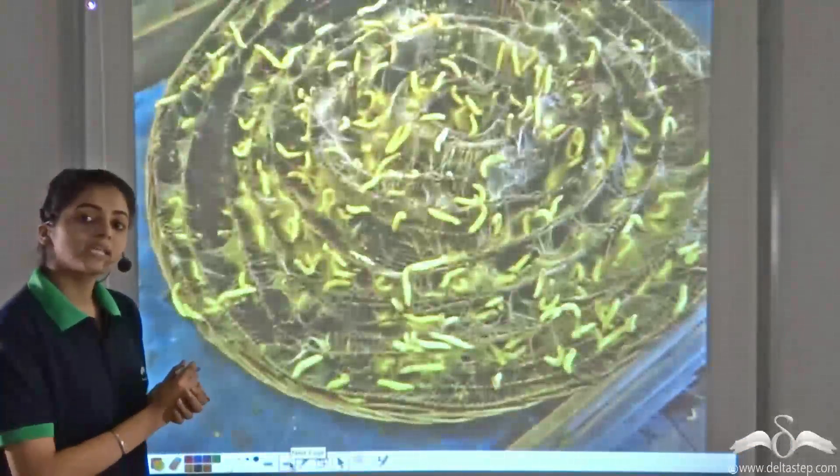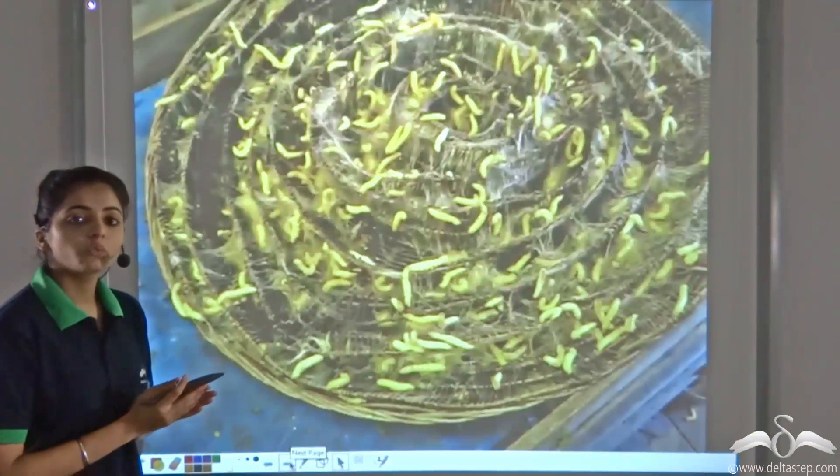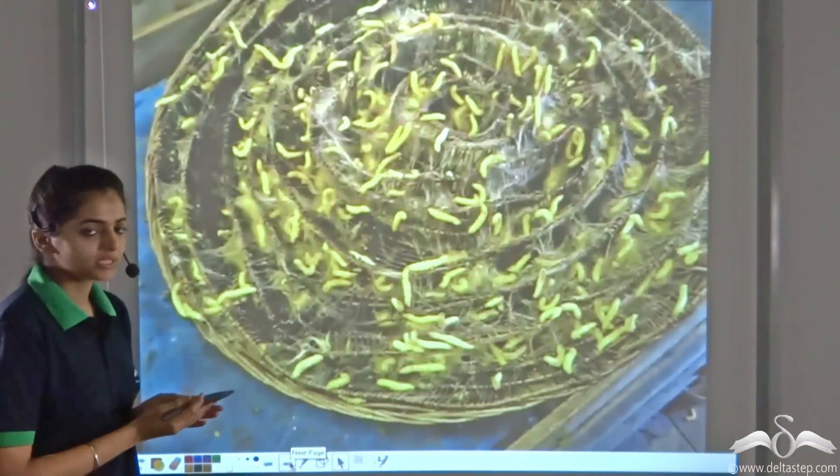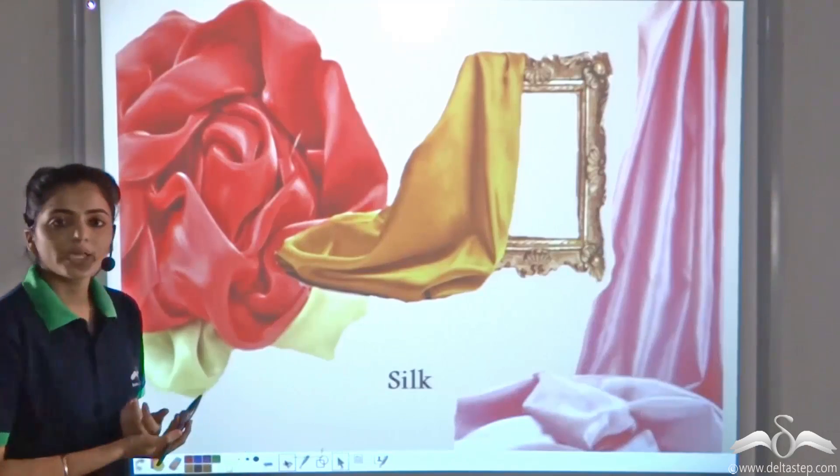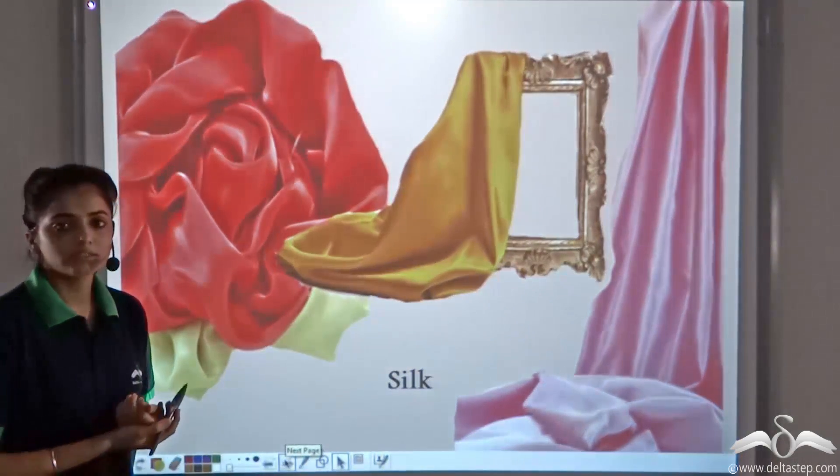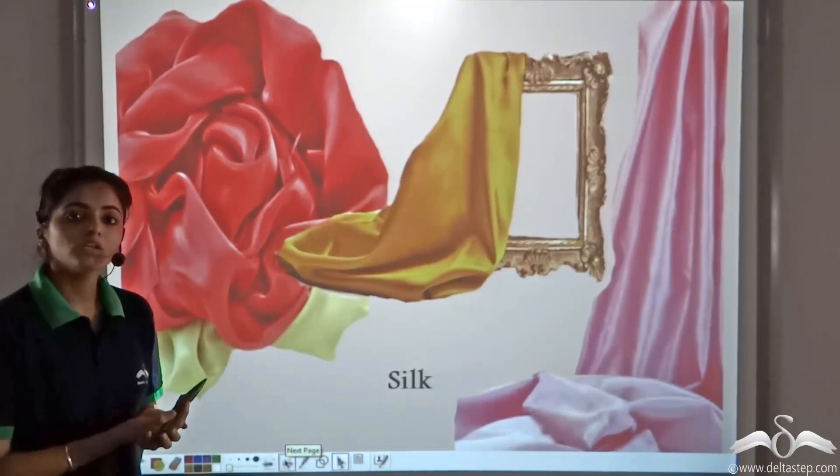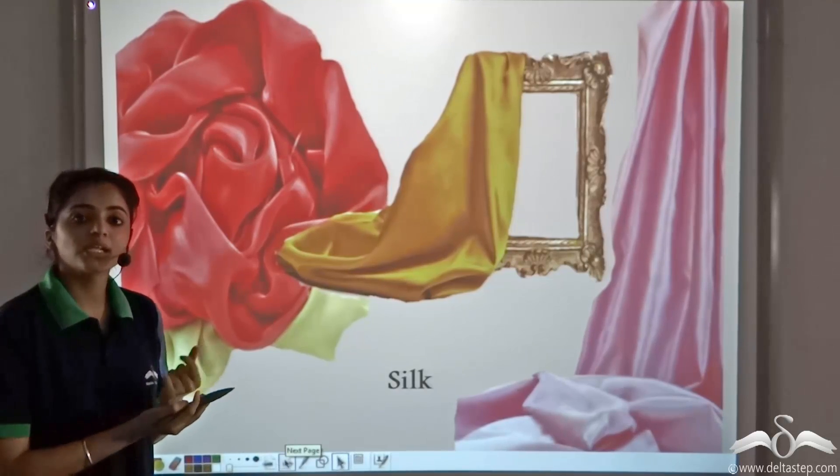Now there are special organisms, these worms, known as silkworms from which we get silk. You must have seen silk. You wear silk clothes, silk curtains and so on. This silk is obtained from the worms, known as silkworms.